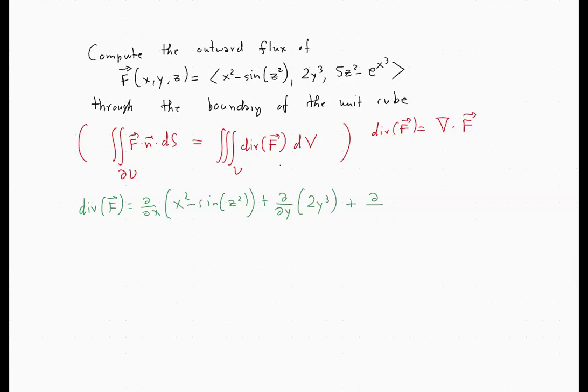And doing this differentiation rids us of all the possibly unpleasant functions that we have here, which if we had to integrate would have been a problem. So we get 2x plus 6y squared plus 10z, and that's what we need to integrate. So let's do that.